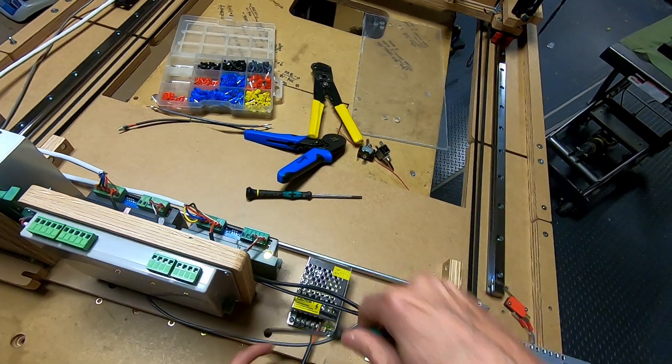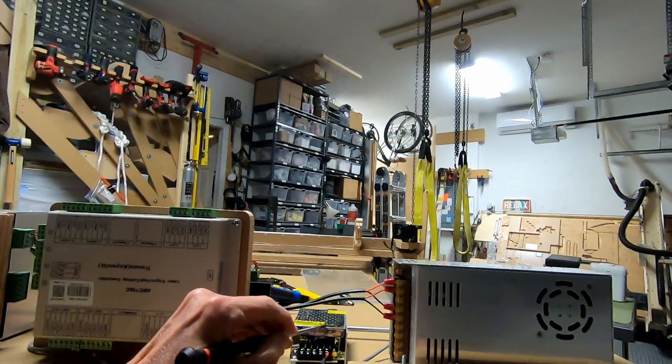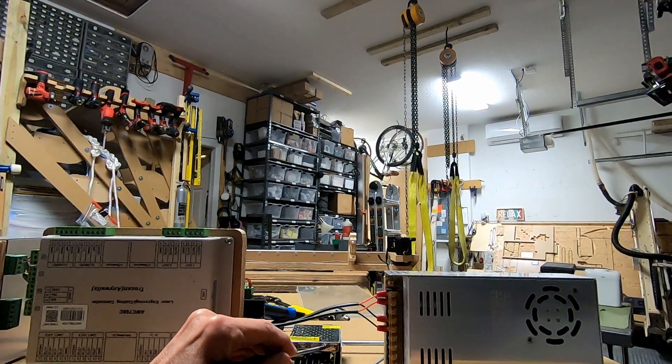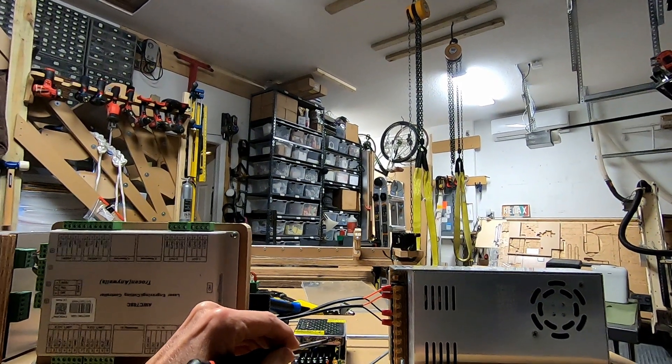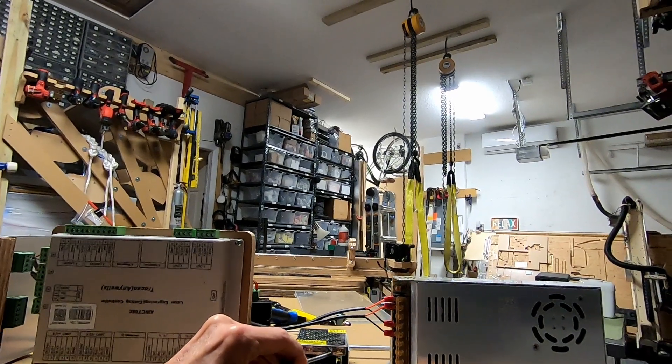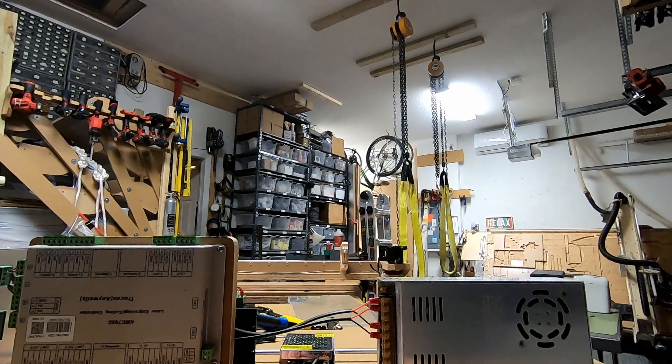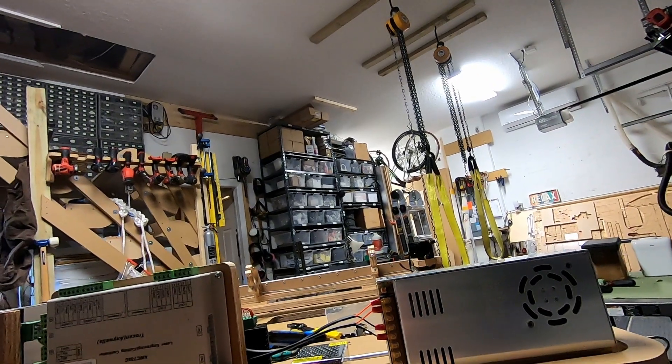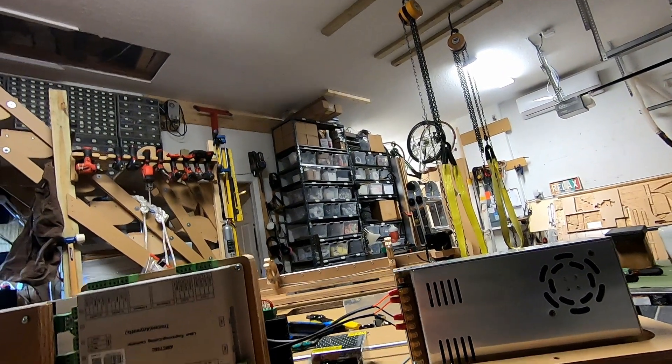You can confirm that this is the V+ and V- using these labels here. It's very difficult to see on this particular power supply, but this is V+, or it actually says plus V, and minus V. This one is ground for earth ground, neutral, and live.